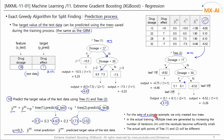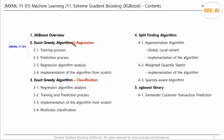In this example, we used only two trees in two iterations to simplify the problem. In actual training, multiple trees are created by increasing the number of iterations until the residuals are sufficiently reduced, and the split points on different trees will actually be different. So far, we have looked at the training and prediction process for XGBoost regression's exact greedy algorithm. In the next video, we will analyze this algorithm in more detail through the contents of the paper.